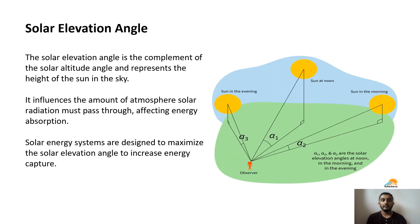The solar elevation angle is a component of the solar altitude angle and represents the height of the sun in the sky. It influences the amount of atmosphere that solar radiation must pass through, affecting energy absorption. Solar energy systems are designed to maximize the solar elevation angle to increase energy capture.